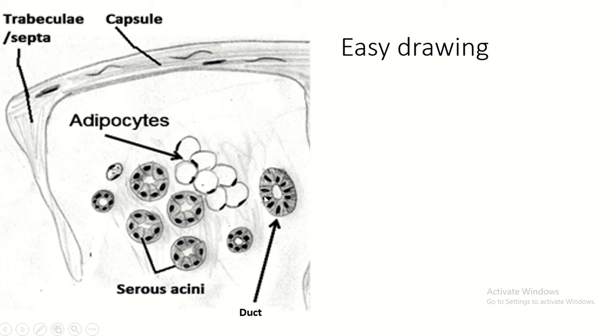This is an easy drawing of the parotid gland. This is the serous acini, duct, adipose cell, capsule, and trabeculae or septa.